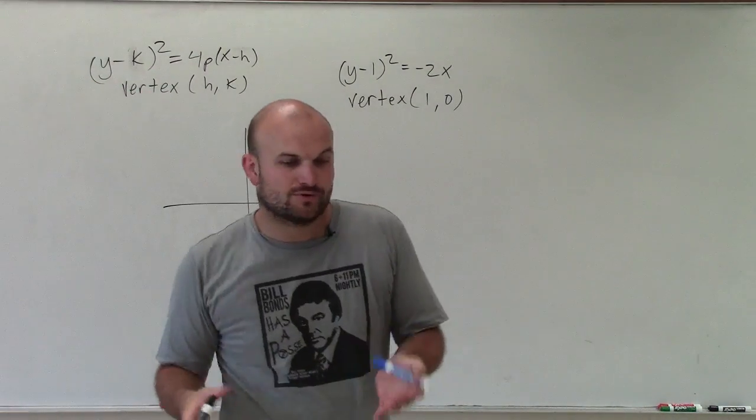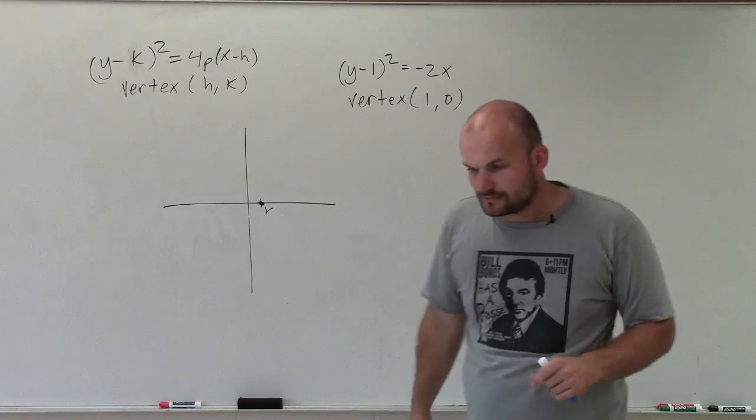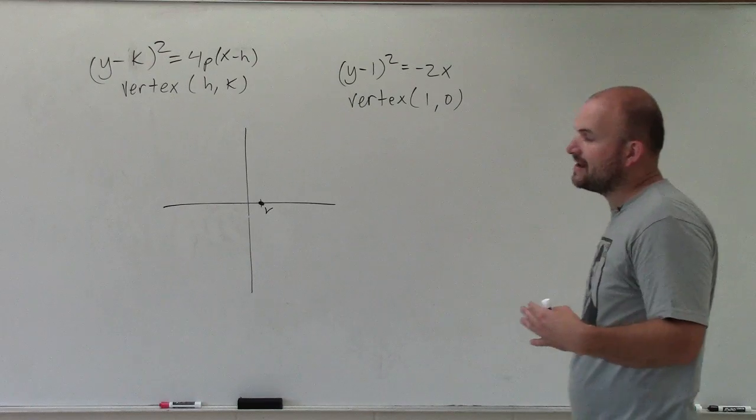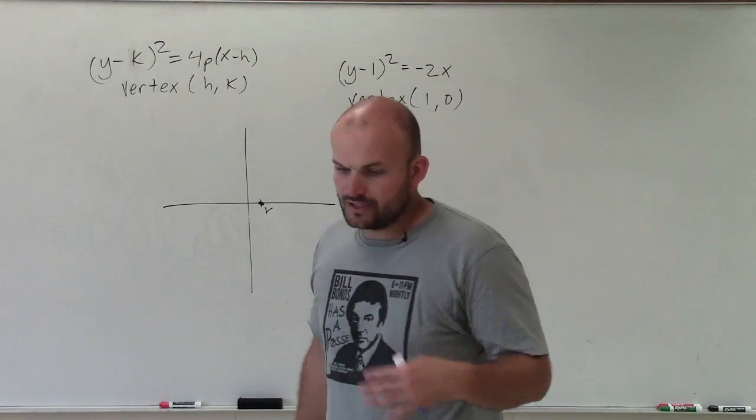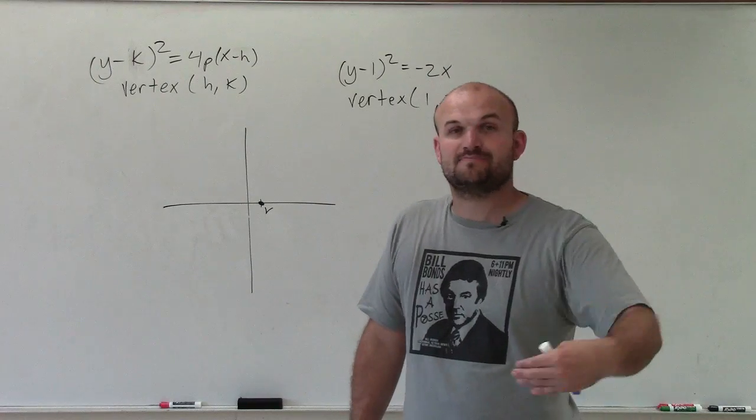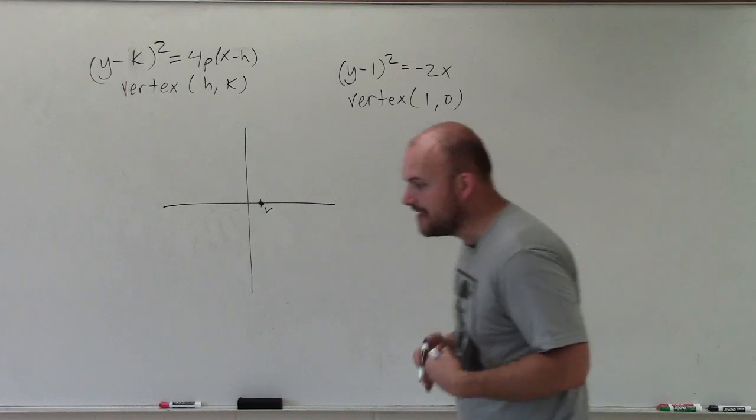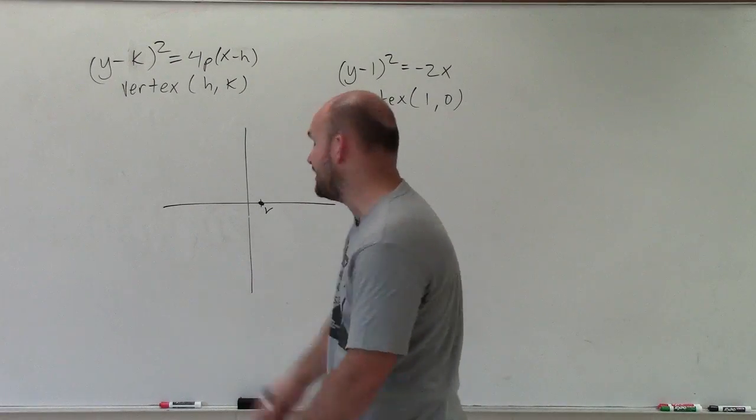Now remember, since y is squared, I know my parabola is either going to open up to the right or open up to the left. So I need to be able to identify which way it's going to go, and that's all going to depend on the value of p. If p is positive, that means the parabola opens to the right. If p is negative, that means it's going to open up to the left.